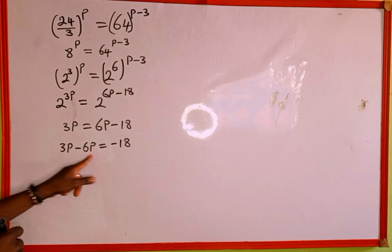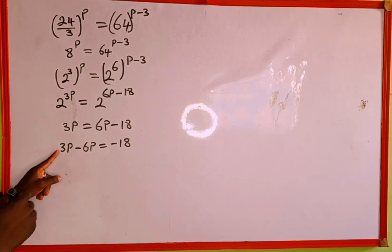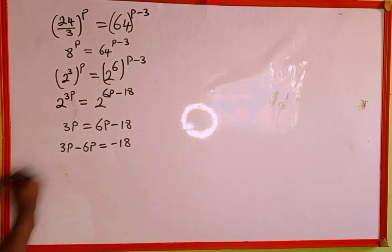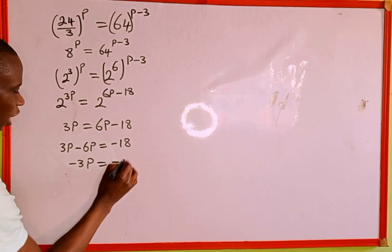Since the variables are similar, we can take away 6 from 3. If you take away 6p from 3p, we have minus 3p, which equals minus 18.